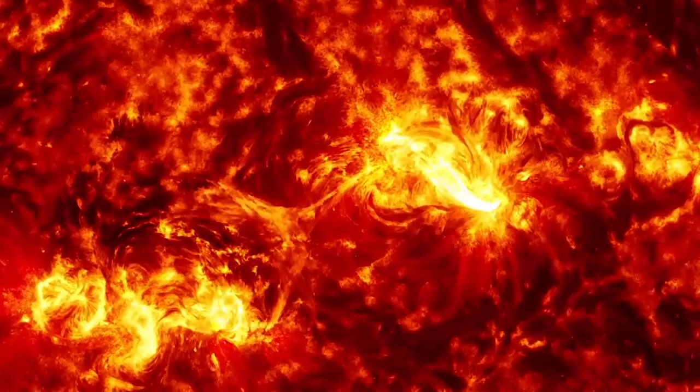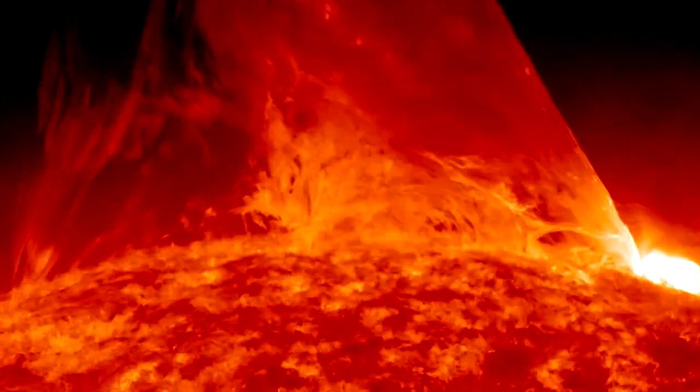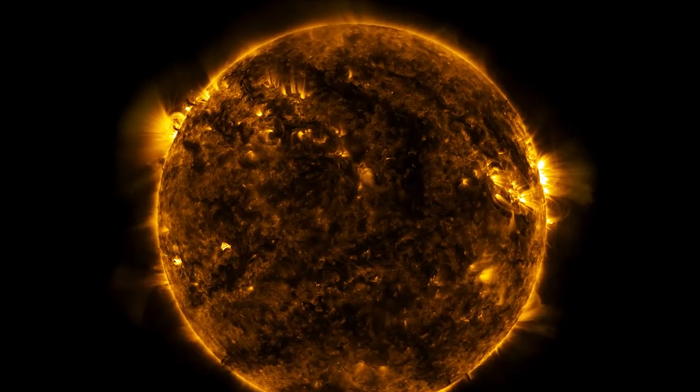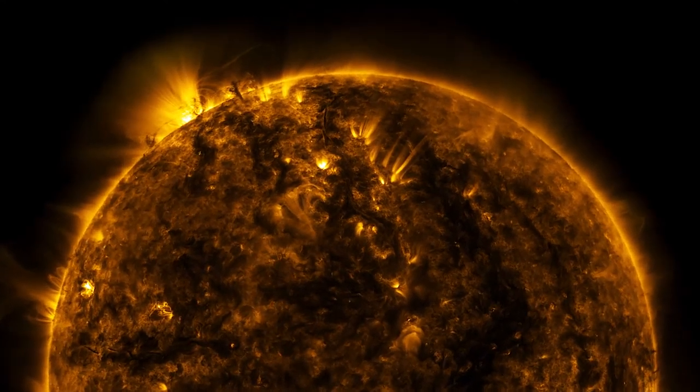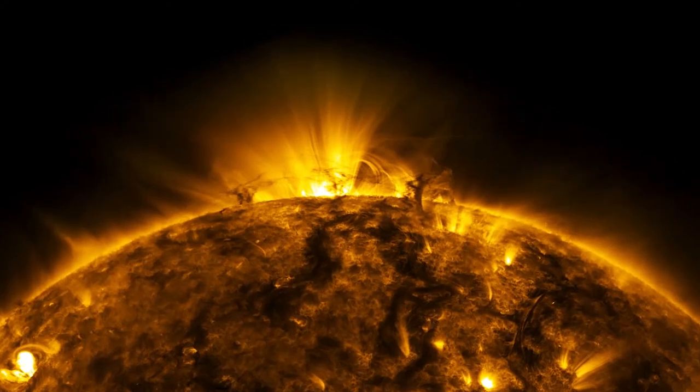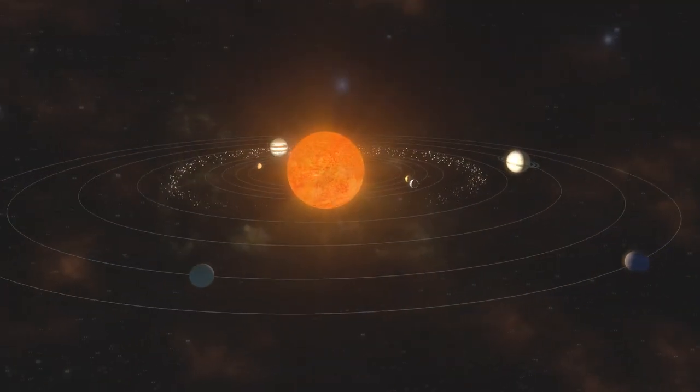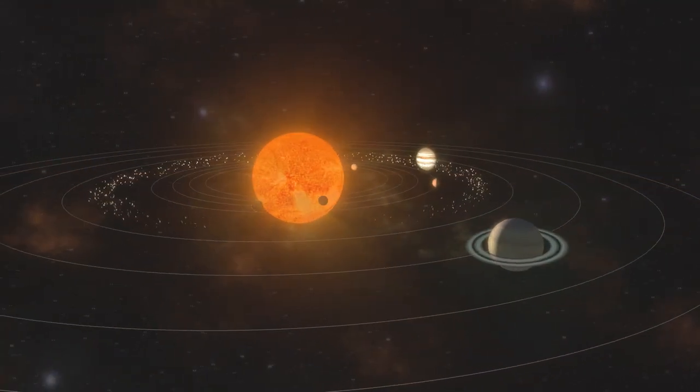The Sun is 432,168.6 miles across. It would take more than 300,000 Earths to equal its mass. It would take 1.3 million Earths to fill it up. While it is huge compared to the Earth, it is really just a medium-sized star.